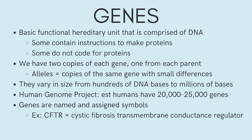A gene is the basic physical and functional unit of heredity. Genes are made up of DNA. Some genes act as instructions to make proteins, and others do not code for proteins. In humans, genes vary in size from a few hundred DNA bases to more than 2 million bases. The Human Genome Project has estimated that humans have between 20,000 and 25,000 genes. Every person has two copies of each gene, one inherited from each parent. Most genes are the same in all people, but a small number of genes are slightly different between people. Alleles are forms of the same gene with small differences in their sequence of DNA bases, and these small differences contribute to each person's unique physical features.